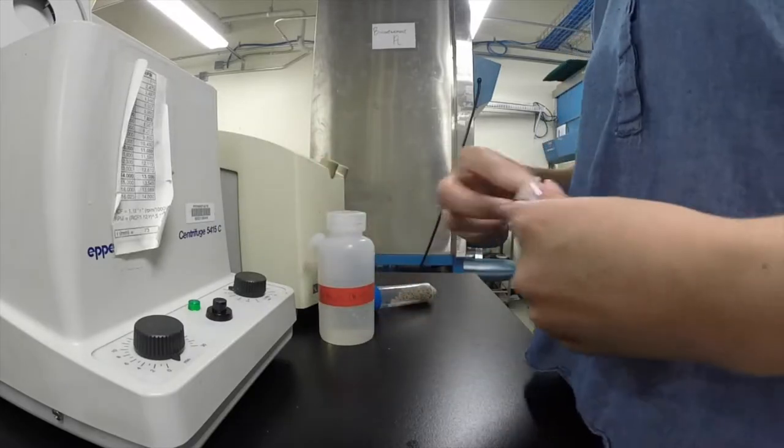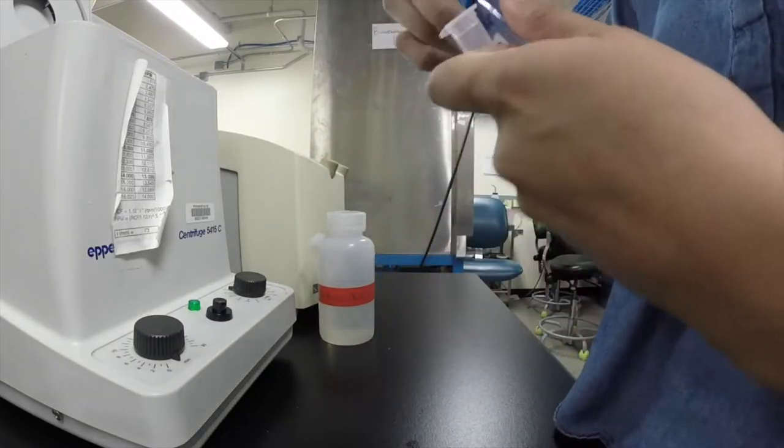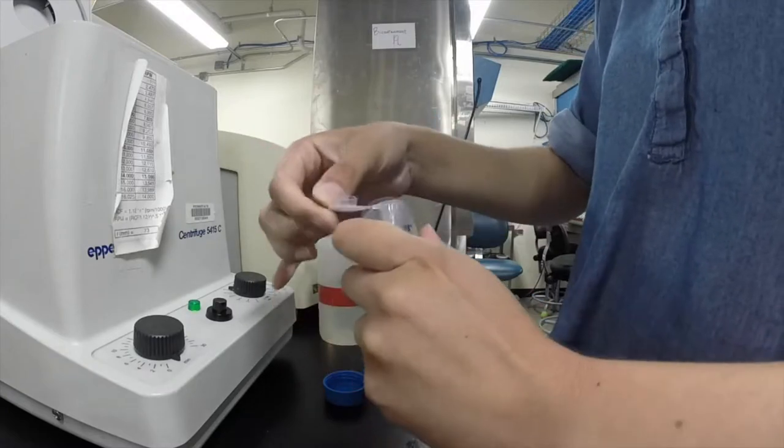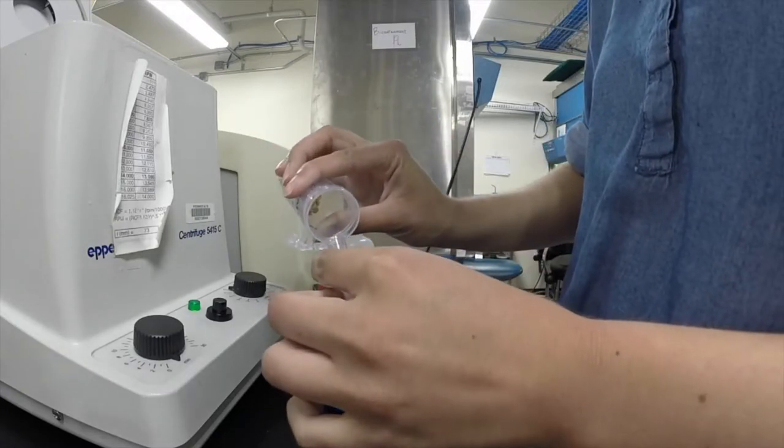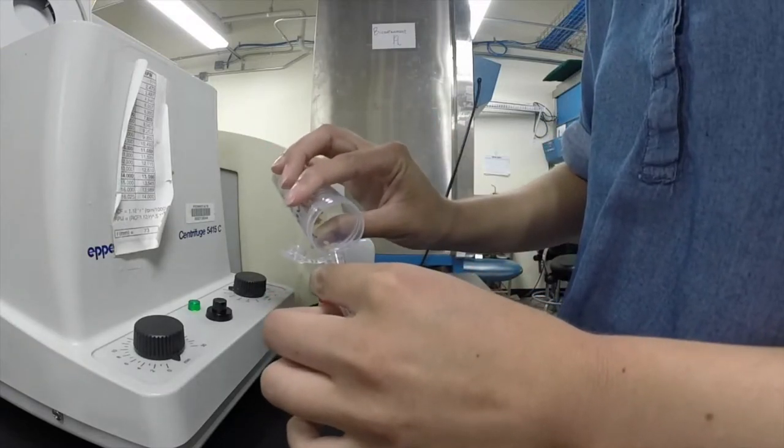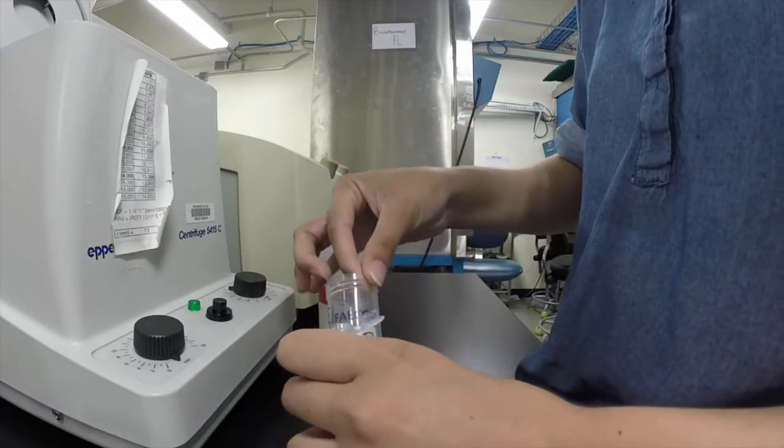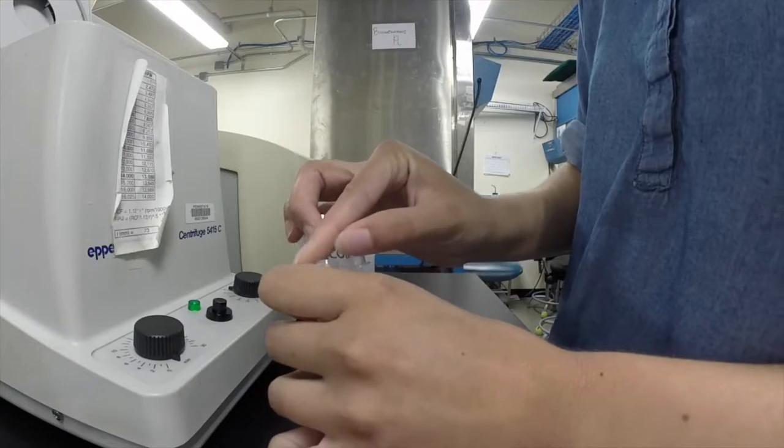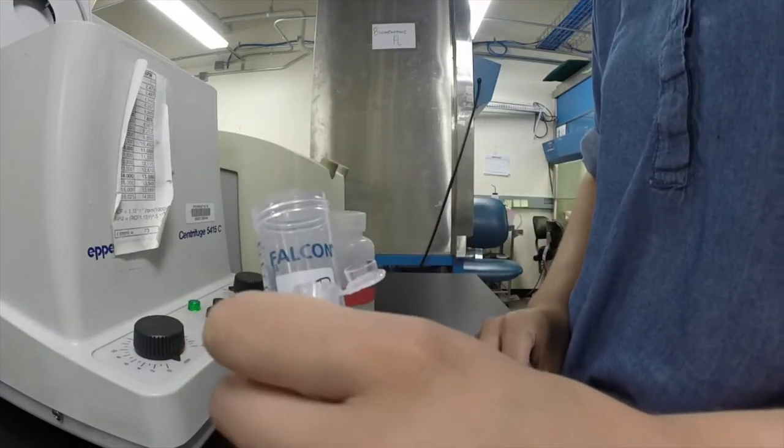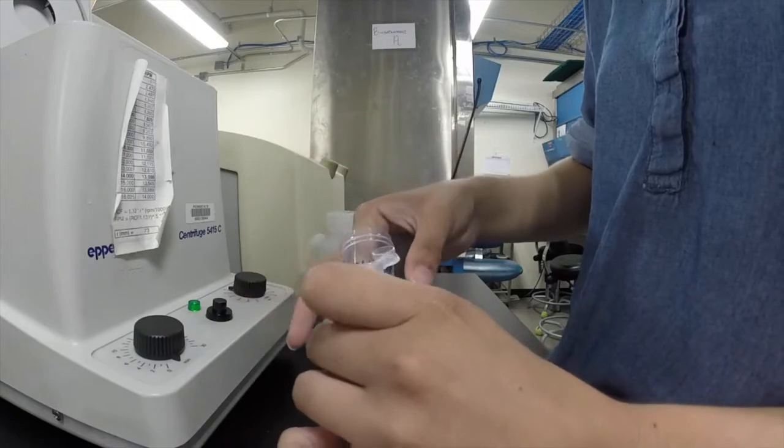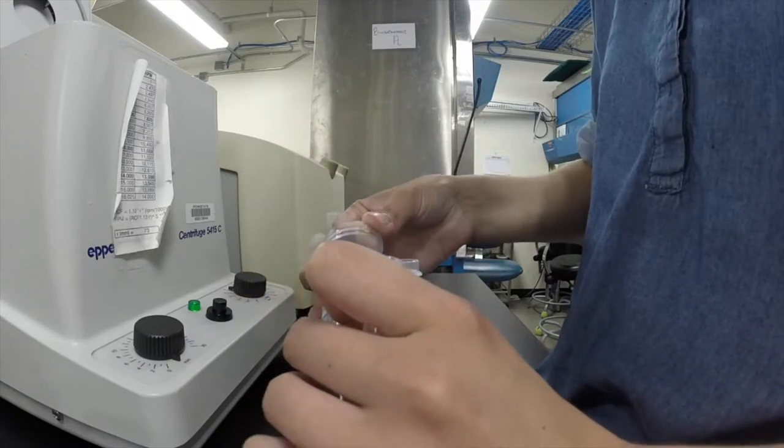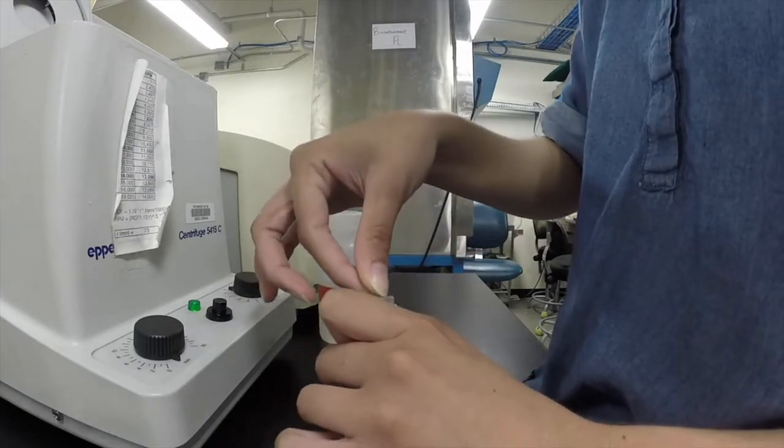What we're going to do is take some of the seeds into the epi tube. We're going to fill the epi tube about halfway. We want to make sure there's plenty of room for them to slosh around and get sterilized.